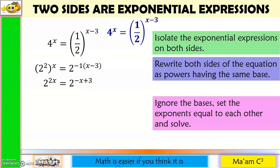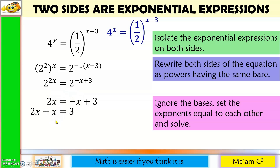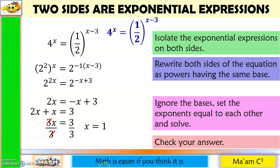I can now move to step 3. Let us equate the exponents. So 2x is equal to negative x plus 3. Move negative x to the other side: 2x plus x equals 3. 2x plus x is 3x, so 3x equals 3. Divide both sides by 3: 3 cancels out, so x is equal to 1. Last step: check your answer — you do the checking.